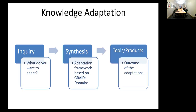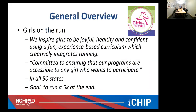The inquiry is really: what do we want or need to adapt? Then we take that information and make the adaptations based on a framework called the GRADES domains framework — which stands for Guidelines, Recommendations, Adaptations Including Disability and Environment. With the adaptations, we also create some tools and products. These are the outcomes of the adaptation — sometimes an adaptive program or an adaptive tool or product.